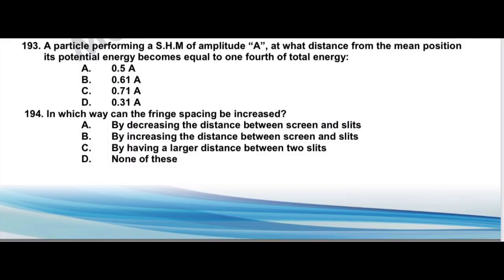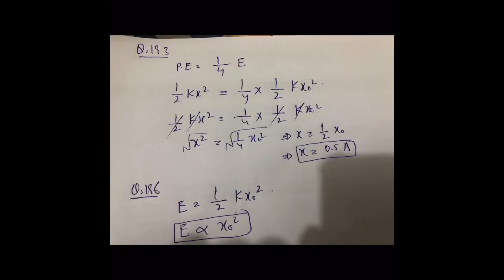Question 193: a particle performs SHM of amplitude x₀. At what distance from mean position does potential energy become one-fourth of total energy? PE = ¼ × TE: ½kx² = ¼ × ½kx₀². Simplifying: x² = ¼x₀², so x = ½x₀ = 0.5 times the amplitude.